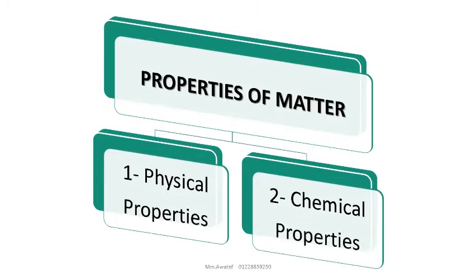Properties of matter. Each matter has two different groups of properties. Number one, physical properties. Number two, chemical properties.